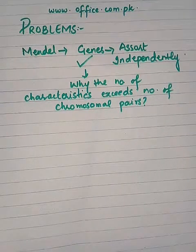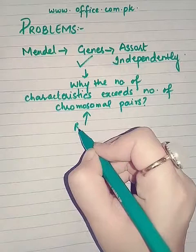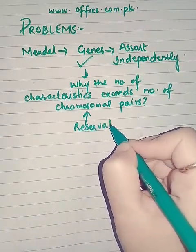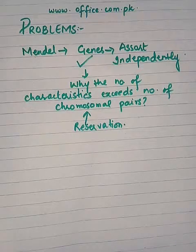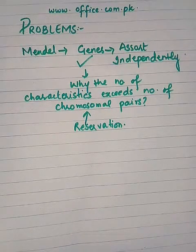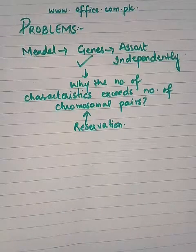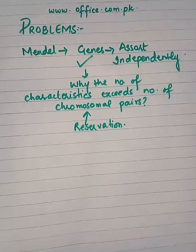This point caused scientists to have reservations about the theory, and they started to think that maybe this theory is not valid anymore. So now we will discuss how the chromosomal theory was proved right by another scientist, because scientists work together on the same point until they reach a conclusion that all agree upon — and then that theory becomes a law.